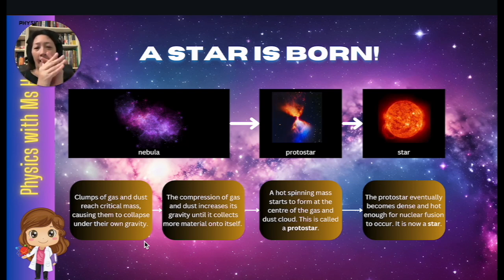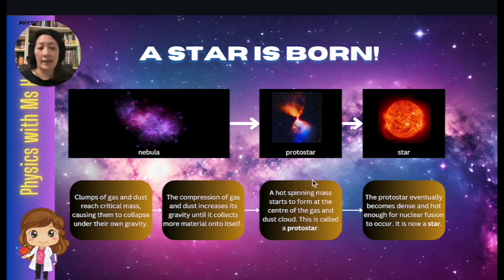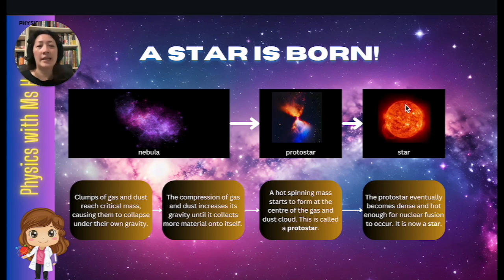The compression of the gas and dust increases its gravity until it collects even more material onto itself. This then goes into the protostar stage, where a hot spinning mass starts to form at the center of the gas and dust cloud. The protostar eventually becomes dense and hot enough for nuclear fusion to occur. It is now a stable star, which is in the main sequence stage.